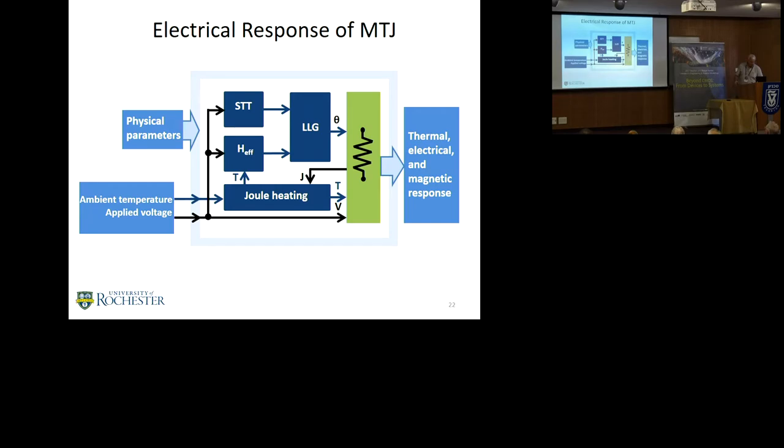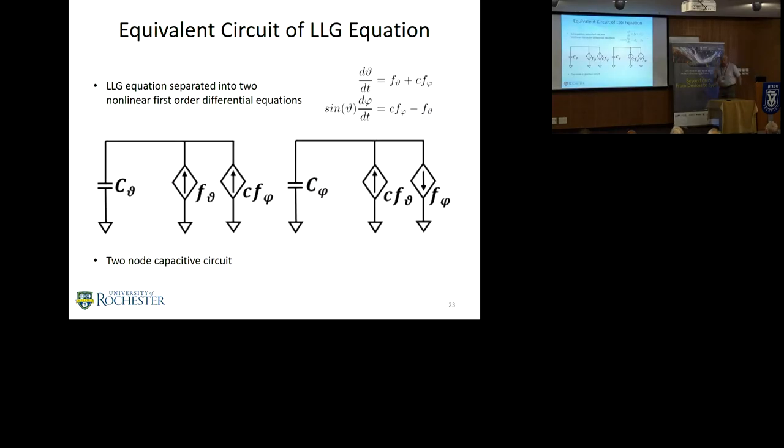We also look at the electrical response of the MTJ. We actually take the LLG equations, recognize that these two variables are independent, and we can then break it down into two first-order nonlinear differential equations to characterize the LLG. Now we have a nice, simple electrical node characteristic of this system that we can actually do some simulations with. We've got the magnetic response, the thermal response, and we have a nice electrical model that we all recognize right out of our EE 101 class that allows us to characterize the behavior of this MTJ.